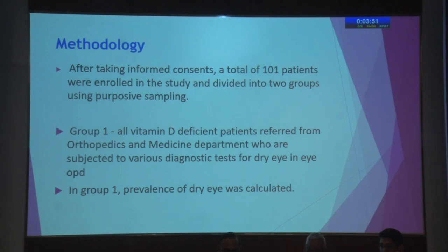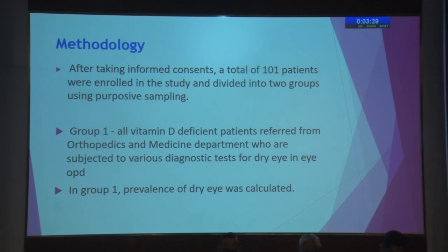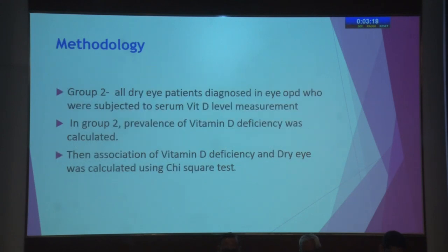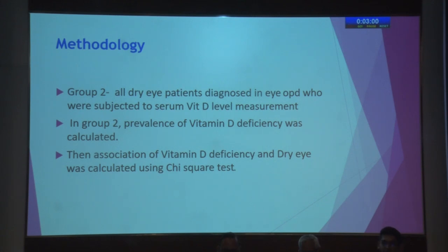After taking ethical approval from the institutional ethical committee and informed consent from patients, a total of 101 patients were enrolled and divided into two groups. Group 1 comprised vitamin D deficient patients referred from orthopedic and medicine departments, who were subjected to various diagnostic tests in the IOPD for dry eye — in this group, prevalence of dry eye was calculated. Group 2 comprised dry eye patients diagnosed in the IOPD who were subjected to serum vitamin D level measurement, and prevalence of vitamin D deficiency was calculated. The association between the two was calculated using the chi-square test.